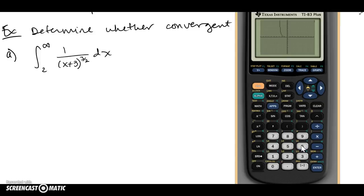Okay, so let's look at the graph. We're looking at the graph from 2 to infinity, so somewhere here, and it looks like it is really approaching the x-axis fairly quickly. Let's zoom in.